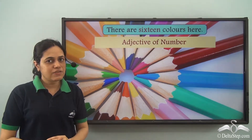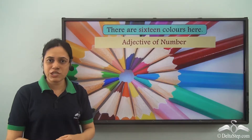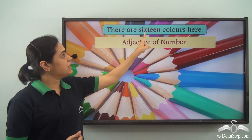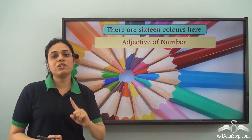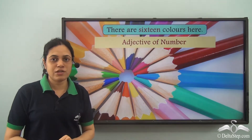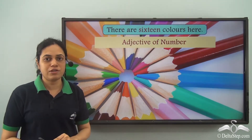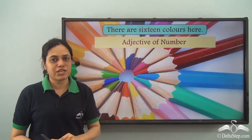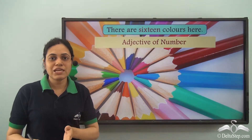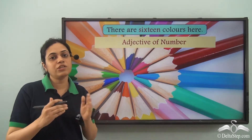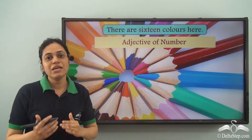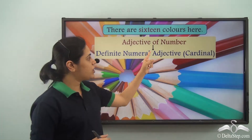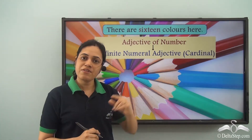Adjectives of number can be of three types. Sixteen is telling us about the exact, definite number of colors, so it is a definite numeral adjective. And because it is telling us about the number and not the position, it is cardinal. So it is a definite numeral adjective, cardinal.